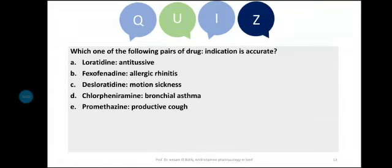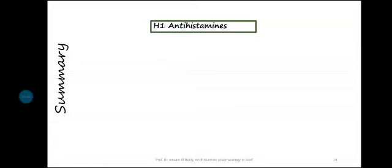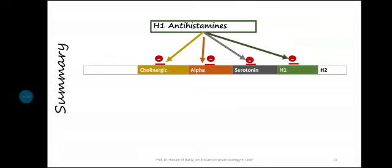Quiz: Which drug-indication pair is accurate? Loratadine as antitussive — No, loratadine is second generation and not used for cough. Fexofenadine in allergic rhinitis — Yes, this is correct. Desloratadine for motion sickness — No, second generation not used. Chlorpheniramine for bronchial asthma — No, antihistamines are not used in bronchial asthma. Promethazine for productive cough — No. The answer is fexofenadine in allergic rhinitis.